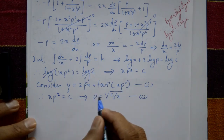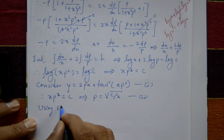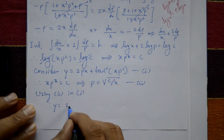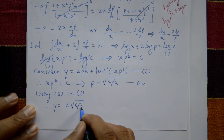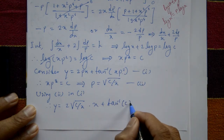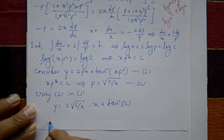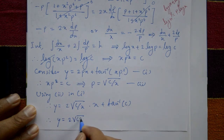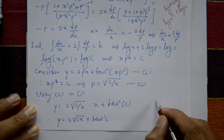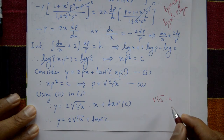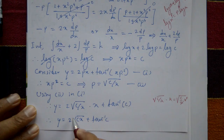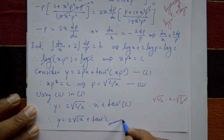Now eliminate p from equation number one using equation number two. Substitute p equals square root of c/x into equation one: y equals 2 times square root of c/x times x plus tan inverse of xp squared. Since xp squared equals c, tan inverse of xp squared becomes tan inverse c. Also, square root of c/x times x simplifies to square root of cx.